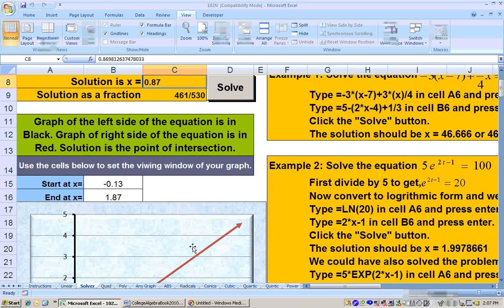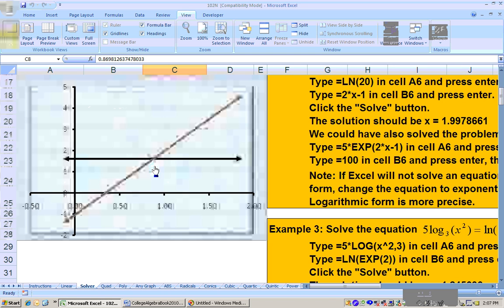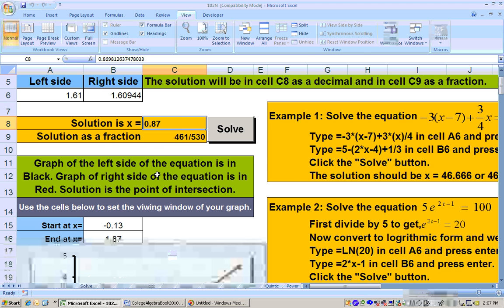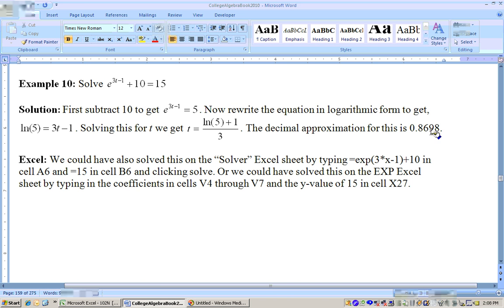well, it does a lot to get you the graph too, to show you where it intersects right here where the left-hand side is equal to the right-hand side, but here's the solution there of 0.87, and I believe that's the answer to that problem, 0.869 to the nearest hundredth is 0.87.